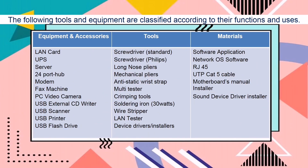The following tools and equipment are classified according to their functions and uses. For the equipment and accessories, we have: LAN card, UPS, server, 24-port hub, modem, fax machine, PC video camera, USB external CD writer, USB scanner, USB printer, and USB flash drive.